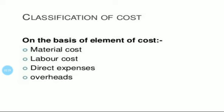Second, labor cost. Labor cost consists of the salary and wages paid to permanent and temporary employees in the pursuit of manufacturing the goods. Third, direct expenses. All expenses other than material cost and labor cost associated with making and selling the goods and services are called direct expenses. Fourth, overheads. Overheads are indirect charges. These are the aggregate of indirect material cost, indirect labor cost, and indirect expenses. These are operating expenses. Overheads cannot be directly charged to a specific cost center or cost unit.